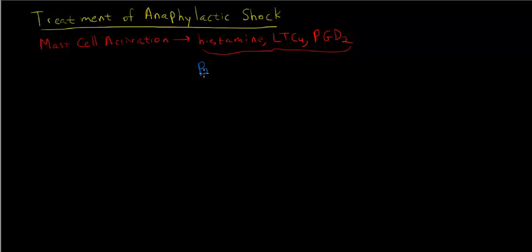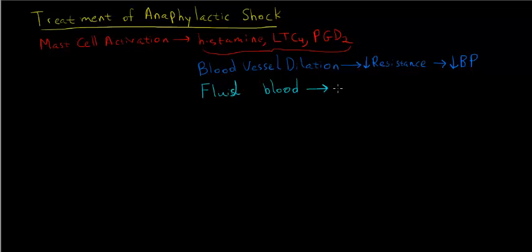Firstly, they cause blood vessel dilation, or vasodilation, which is essentially the relaxation of the smooth muscle in the wall of the blood vessel. This decreases resistance in the circulatory system and leads to decreased blood pressure. At the same time, there is retraction of the endothelial cells which creates gaps between endothelial cells and there's a loss of fluid from the blood space.